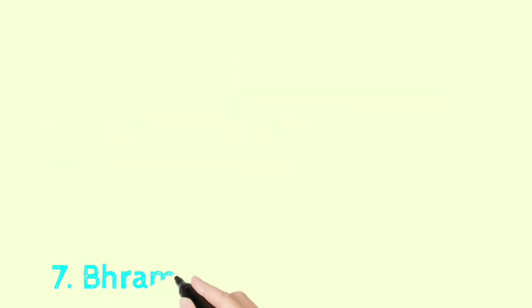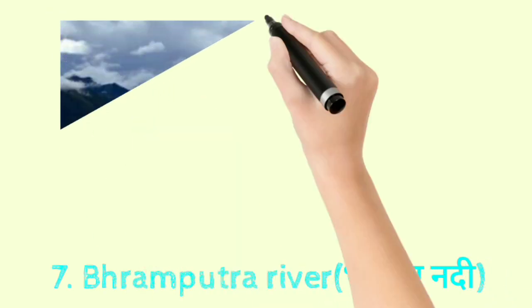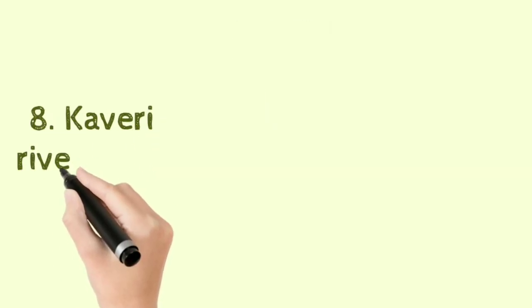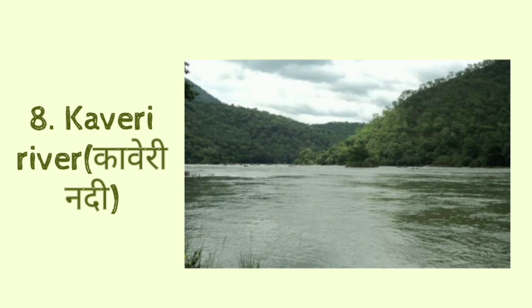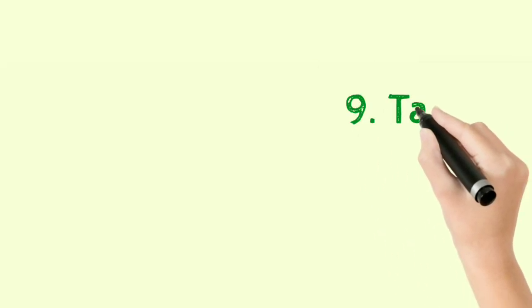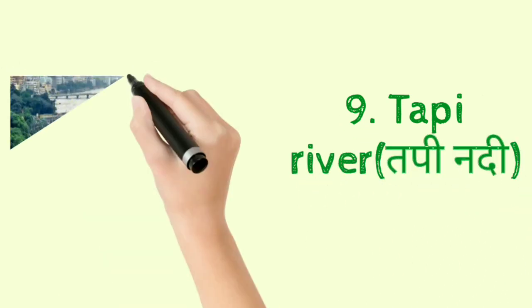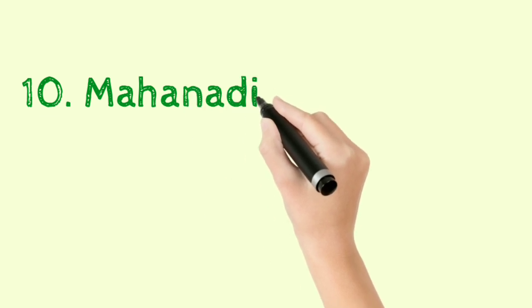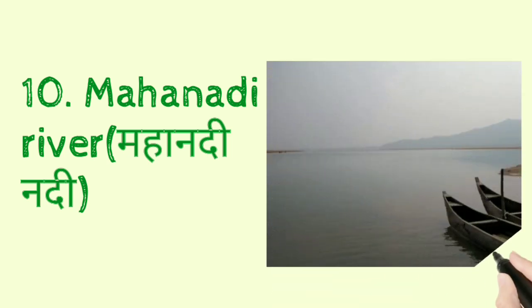Seventh, Brahmaputra river — B-R-A-H-M-A-P-U-T-R-A river, Brahmaputra river. Eighth, Kaveri river — K-A-V-E-R-I river, Kaveri river. Ninth, Tapi river — T-A-P-I river, Tapi river. Tenth, Mahanadi river — M-A-H-A-N-A-D-I river, Mahanadi river.